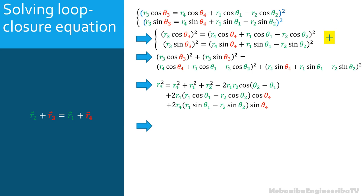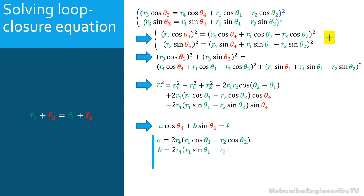Going back to our equation, the left side is simply R3², and the right side simplifies to: R4² + R1² + R2² − 2R1R2·cos(θ2 − θ1) + 2R4·(R1·cos θ1 − R2·cos θ2)·cos θ4 + 2R4·(R1·sin θ1 − R2·sin θ2)·sin θ4. This equation can be simplified as A·cos θ4 + B·sin θ4 = K, where A = 2R4·(R1·cos θ1 − R2·cos θ2), and K = R3² − R4² − R1² − R2² + 2R1R2·cos(θ2 − θ1).